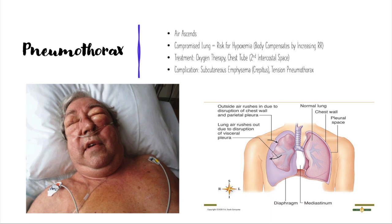An increased respiratory rate is going to increase oxygen delivery to bodily tissues, at least temporarily. Treatment for a pneumothorax includes oxygen therapy to maintain proper oxygenation and the insertion of a chest tube to evacuate the air in the pleural space. Because air ascends, we place the chest tube in the upper or superior region of the pleural space — usually between the second and third intercostal space.